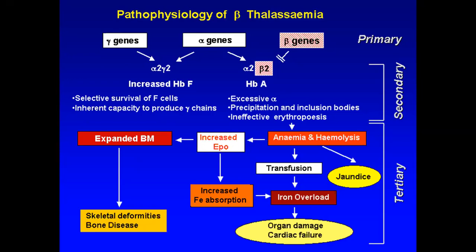The result is anemia. There is increased breakdown of RBCs within the bone marrow and outside in the spleen, resulting in anemia and hemolysis. Due to hemolysis there is an increased level of unconjugated bilirubin, leading to jaundice. Due to anemia the patient requires blood transfusion, and with repeated transfusions there is increased iron load. This iron overload leads to hemosiderosis and damages organs like the heart, bones, and joints.